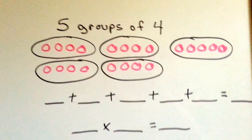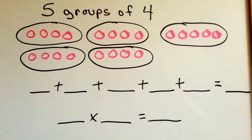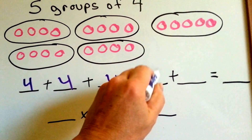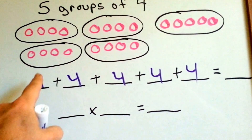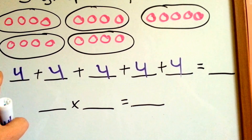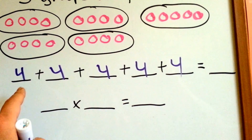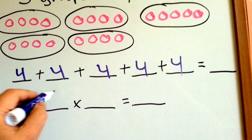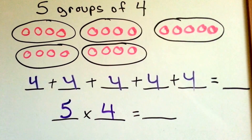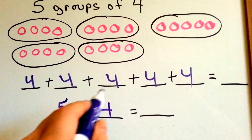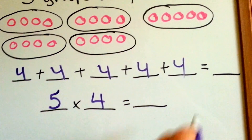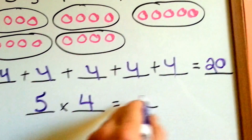Let's look at this one. We have 5 groups of 4: 4 plus 4 plus 4 plus 4 plus 4, 5 times. That's like saying we have 5 times 4. So 4 plus 4 plus 4 plus 4 plus 4 and 5 times 4 are the same thing. They both equal 20.